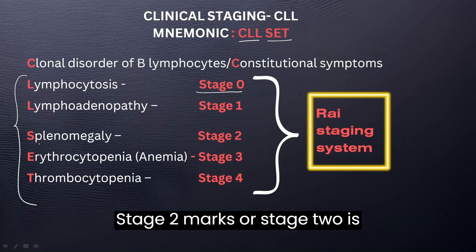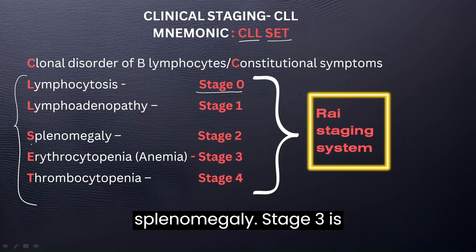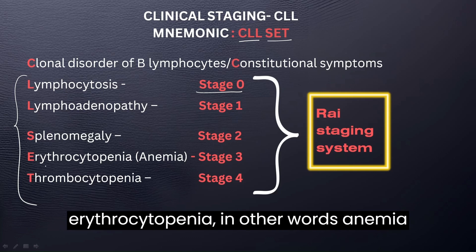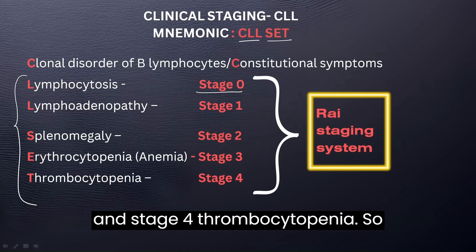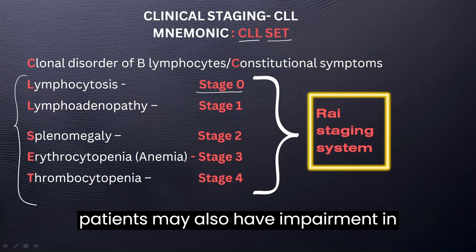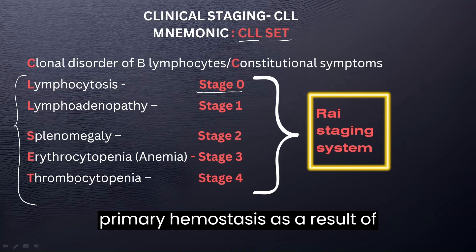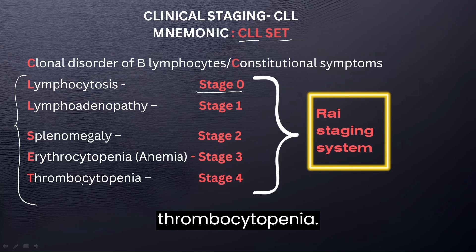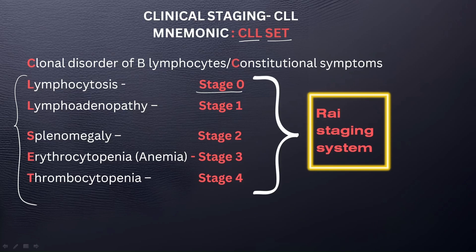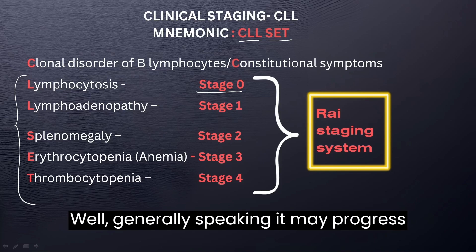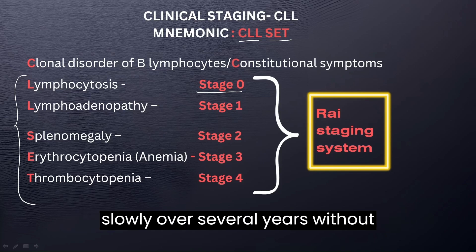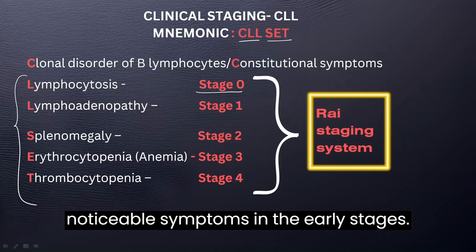Stage two marks splenomegaly. Stage three is erythrocytopenia — in other words, anemia. And stage four is thrombocytopenia, so patients may also have impairment in primary hemostasis as a result. Generally speaking, CLL may progress slowly over several years without noticeable symptoms in the early stages.